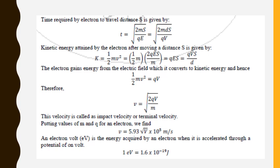The kinetic energy attained by the electron after moving a distance is written as ½mV². We have already calculated the value of V, which can be substituted here. The electron gains energy from the electric field, which is converted to kinetic energy. Setting kinetic energy equal to QV gives the energy gained by motion, and from this we can calculate the impact velocity or terminal velocity acquired by the particle. For an electron accelerated through 1 volt, the energy acquired is 1 electron-volt.